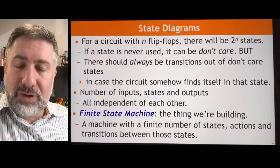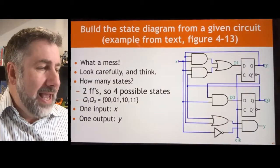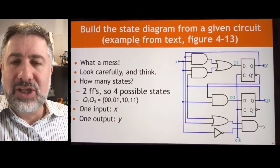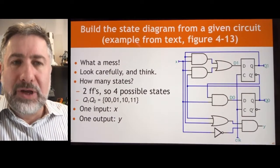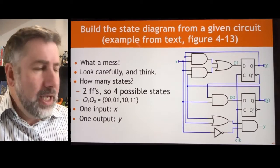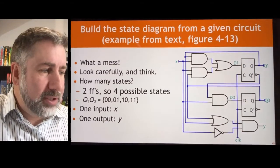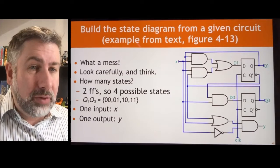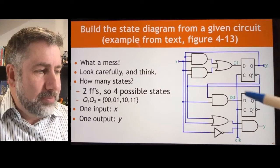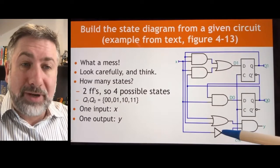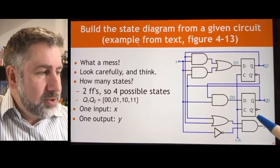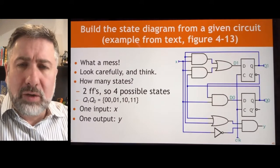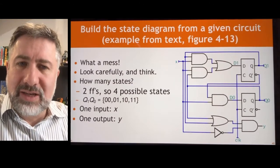Let's start with an example and deconstruct it to see how we got to this point. This is actually an example from the textbook in figure 4-13, and it is confusing to look at — there's a lot going on. We've got a couple of flip-flops, some combinational logic, inputs, outputs, and state variables. Let's walk through this and see what we can find out.